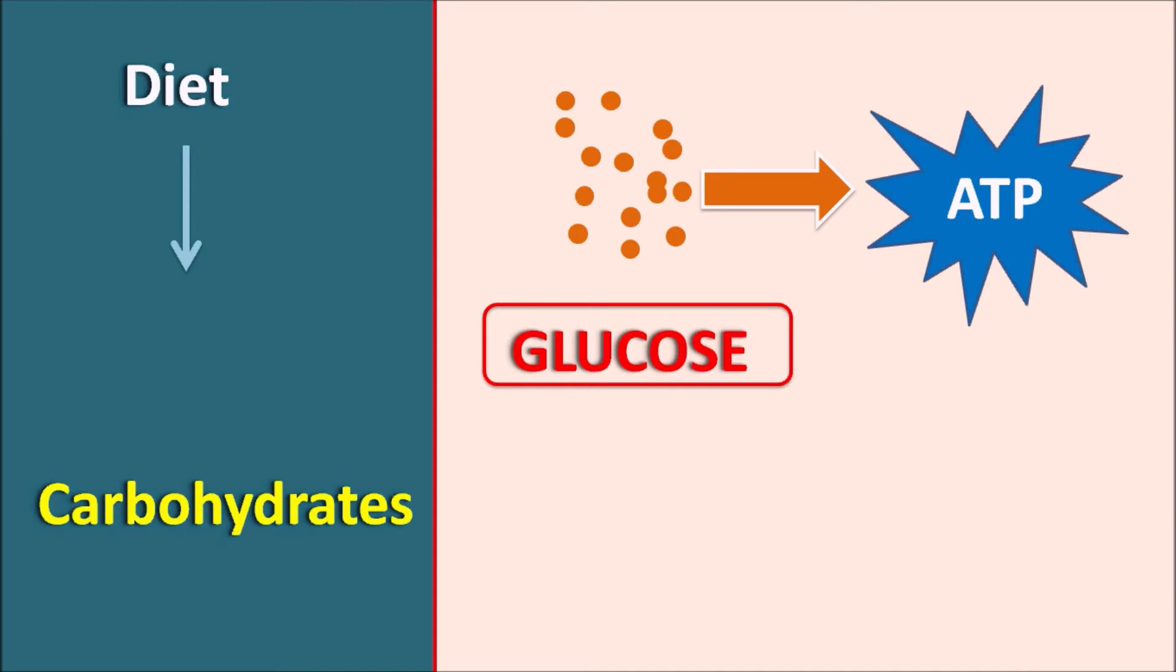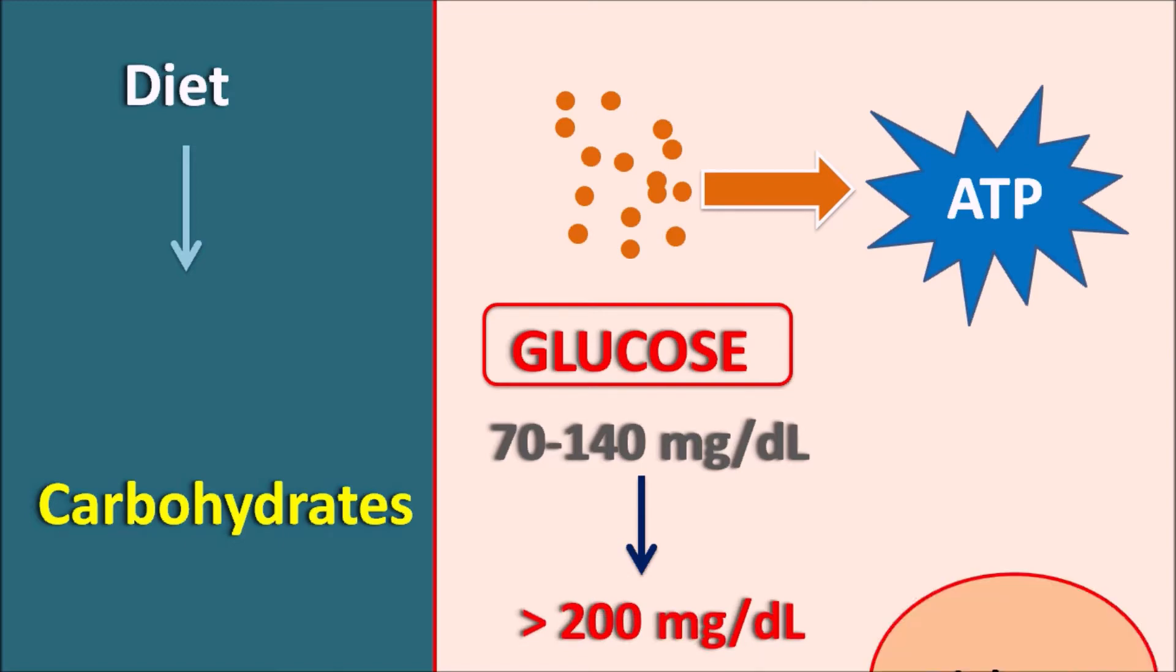When these glucose levels are between 70 to 140 mg per deciliter after a meal, it indicates a normal condition. But when they are abnormally increased above 200 mg per dL after a meal, it indicates a diabetic condition. Even though glucose is an essential component, it should be strictly controlled within the limits in order to prevent diabetic conditions.